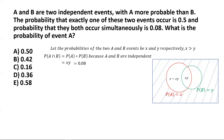Similarly, the part of the green circle not included in the common area of intersection is Y minus XY, since the total probability of event B is Y. Excluding the overlap XY, we are left with Y minus XY, which represents the probability of event B occurring alone without occurrence of event A.